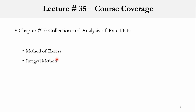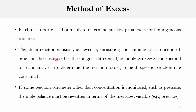The two methods are: number one, the method of excess, and number two, the integral method. In the method of excess, batch reactors are primarily used to determine the rate law parameters for homogeneous reactions, while packed bed reactors are used for heterogeneous systems. We can determine rate law parameters using the batch reactor for a homogeneous system by measuring concentration as a function of time, then using integral, differential, or non-linear regression methods to determine reaction order and specific reaction rate constant.